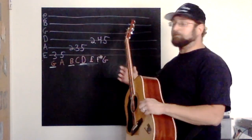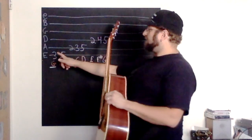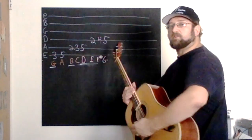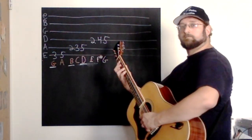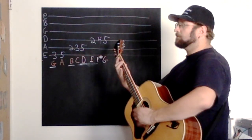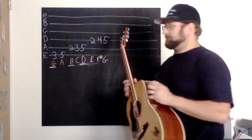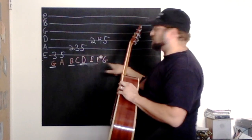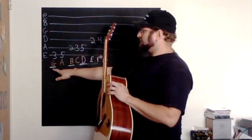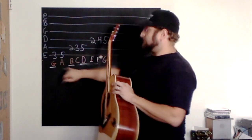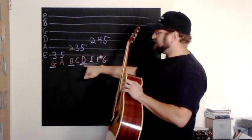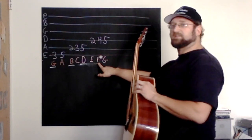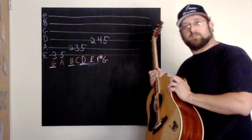Here we have the G major scale. So if you look, we have eight notes in our scale. I've also lettered each note so you know the name of each one. We have G as our first note, A is our second, B is our third, C is our fourth, D is our fifth, E is the sixth, F sharp is the seventh, and G is the eighth.